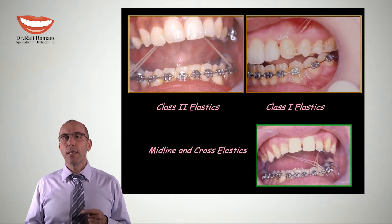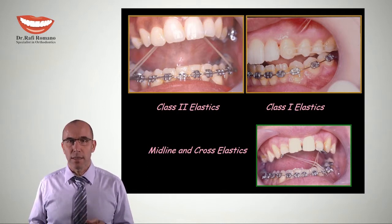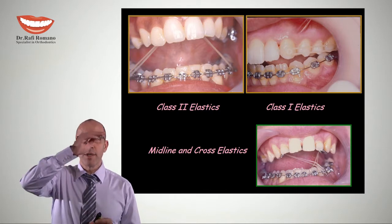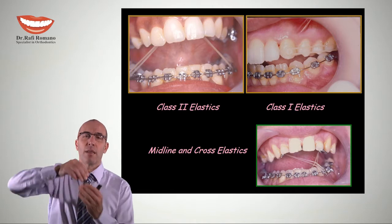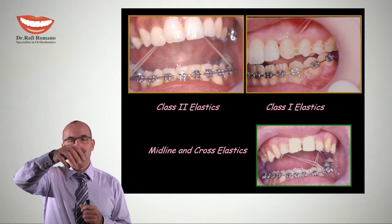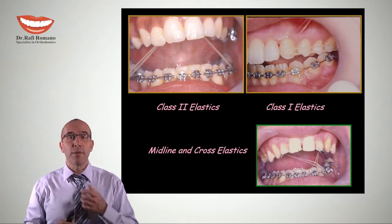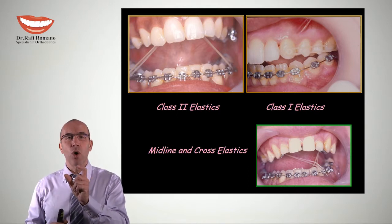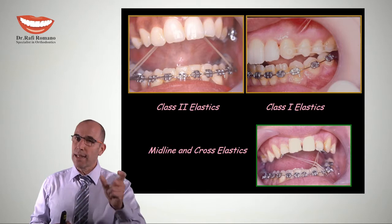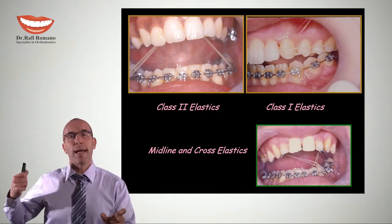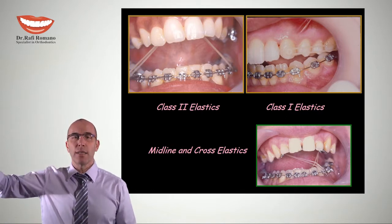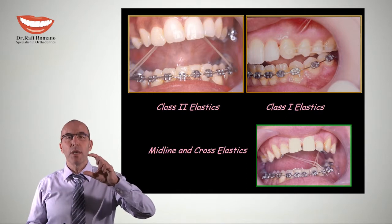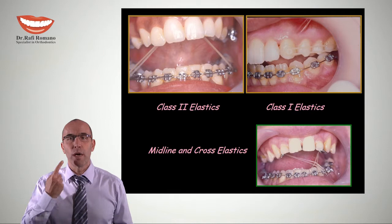Now let's look at the angulation of these elastics. For every elastic there are a few dimensions or vectors. One vector is the horizontal vector — many times we want to advance the lower incisors and retrocline the upper incisors, or to position the mandible in a different location. Because the arches are very small, we have to go as far forward as possible in the upper arch, like the laterals, and as far back as possible in the lower arch, like the second molars, in order to angulate the elastic to be more horizontal versus vertical. If we want more vertical force, we can go from cuspid to premolar or cuspid to first molar.